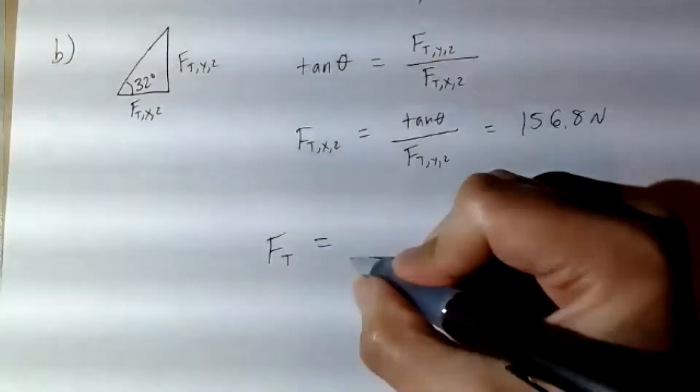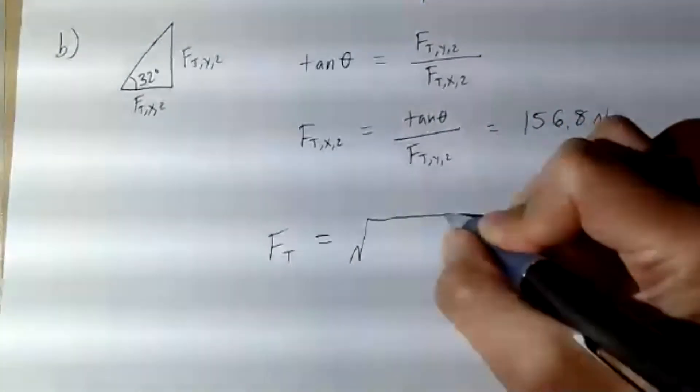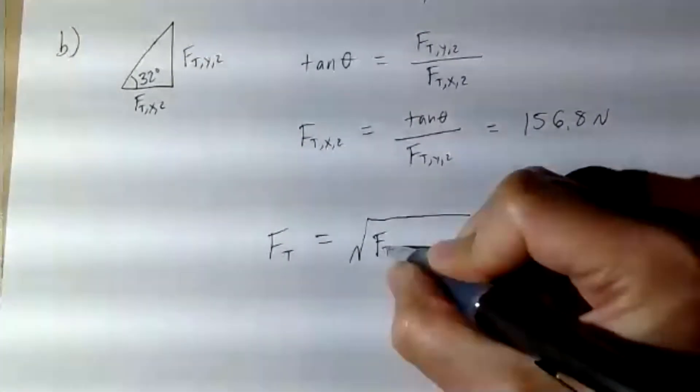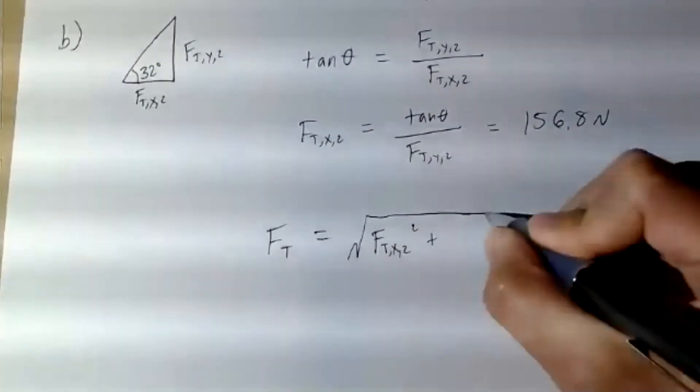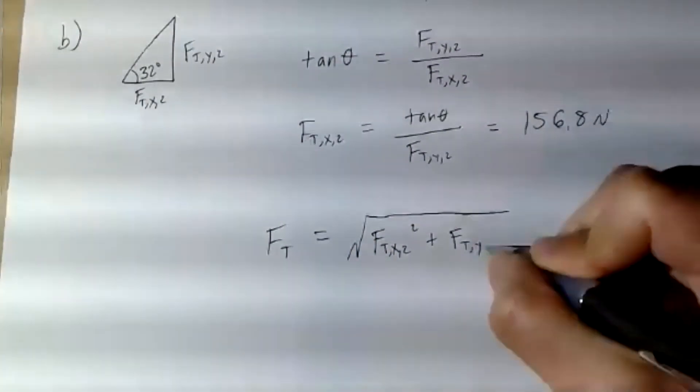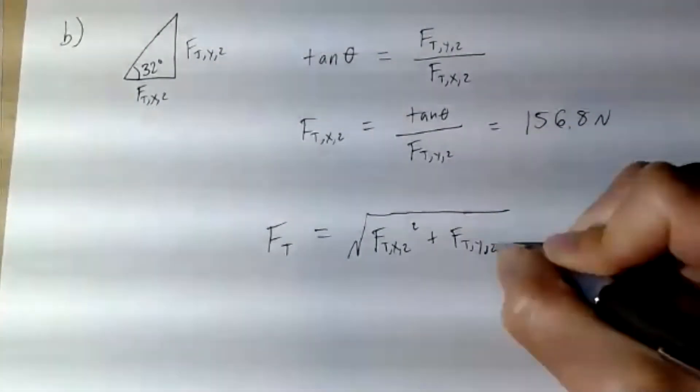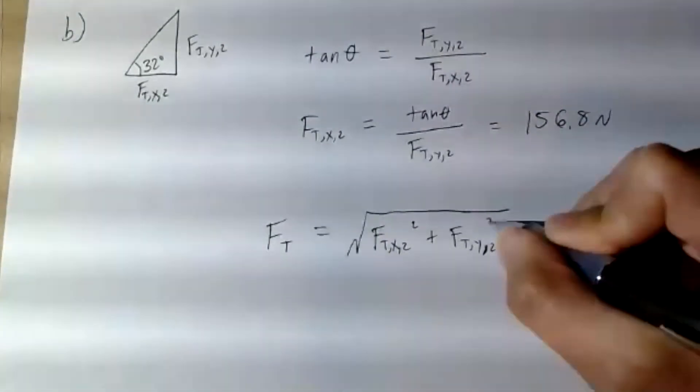So this would be with the use of Pythagorean's theorem: force tension x of rope two squared plus force tension y of rope two squared.